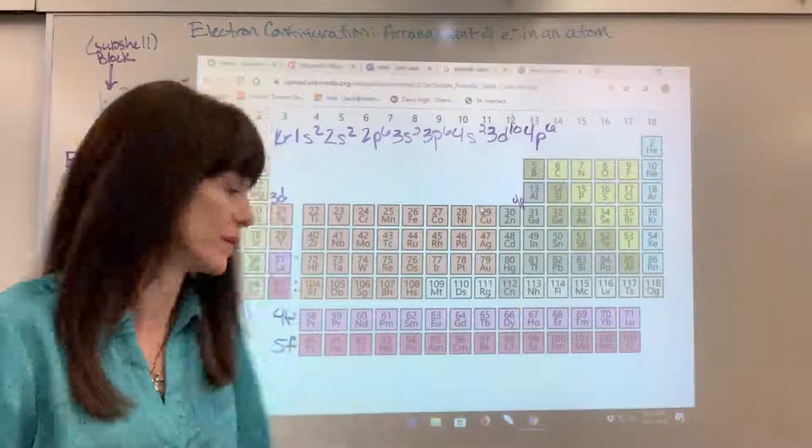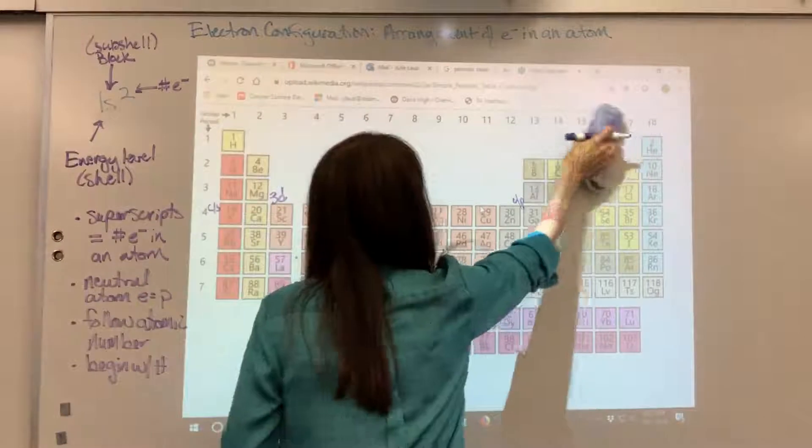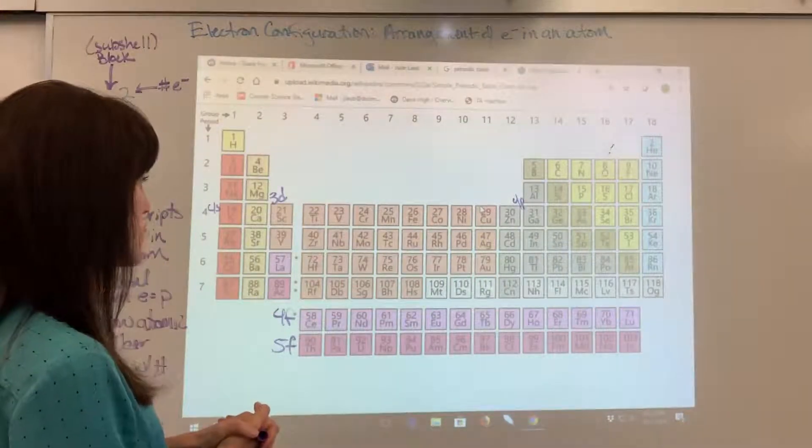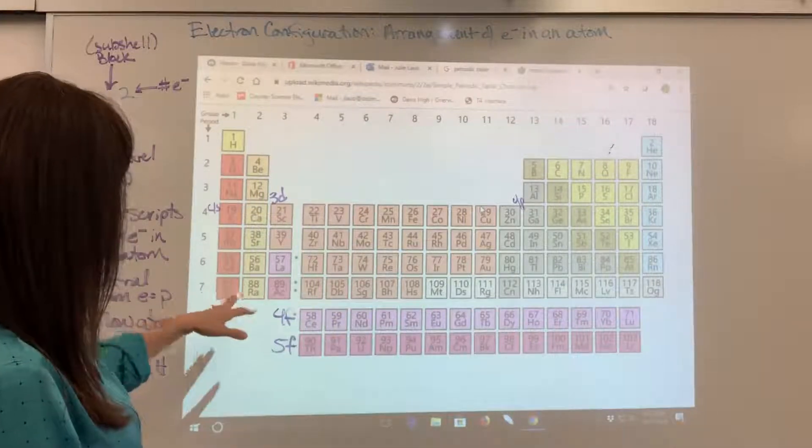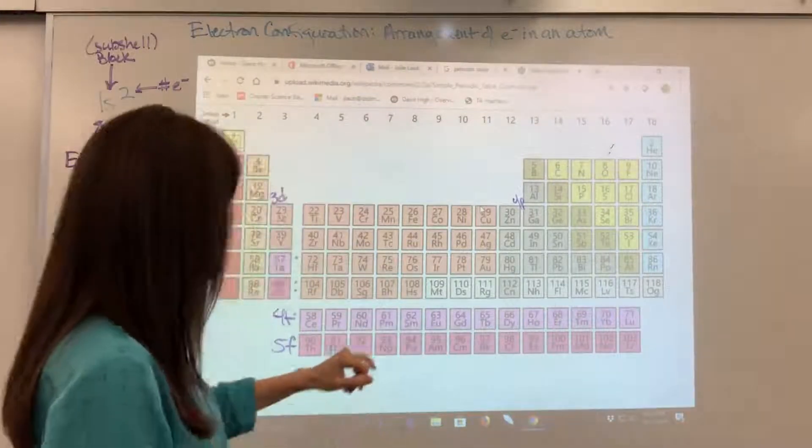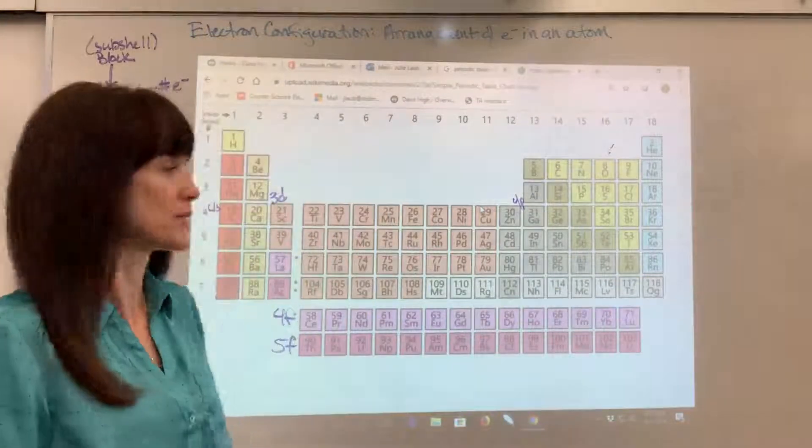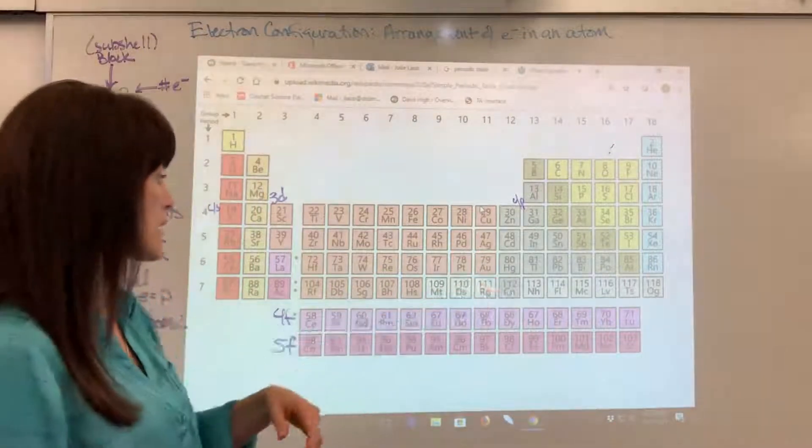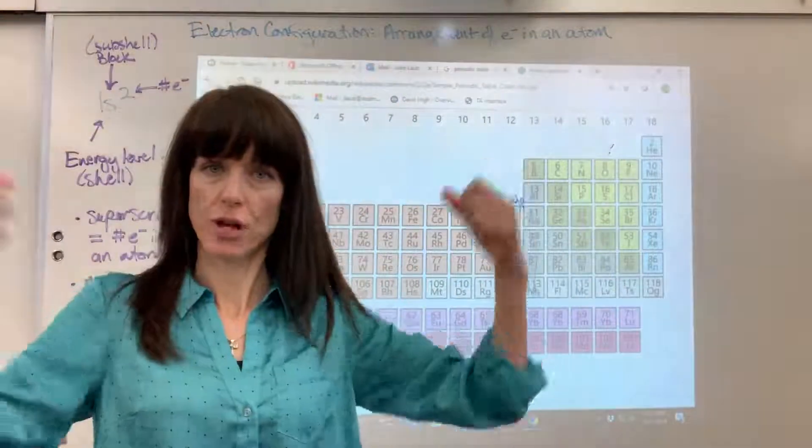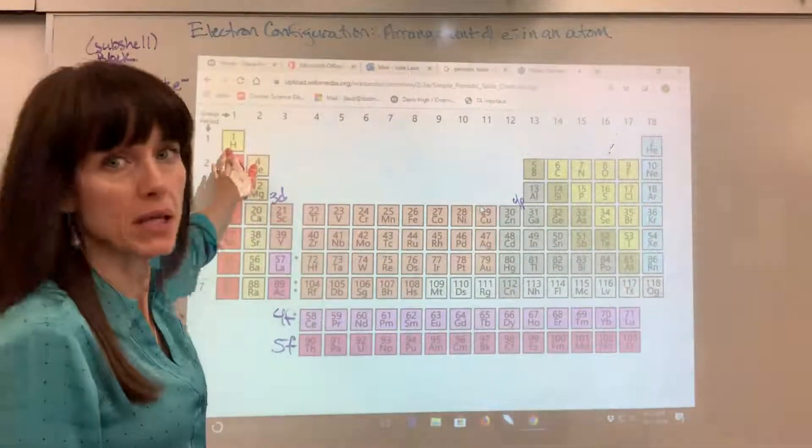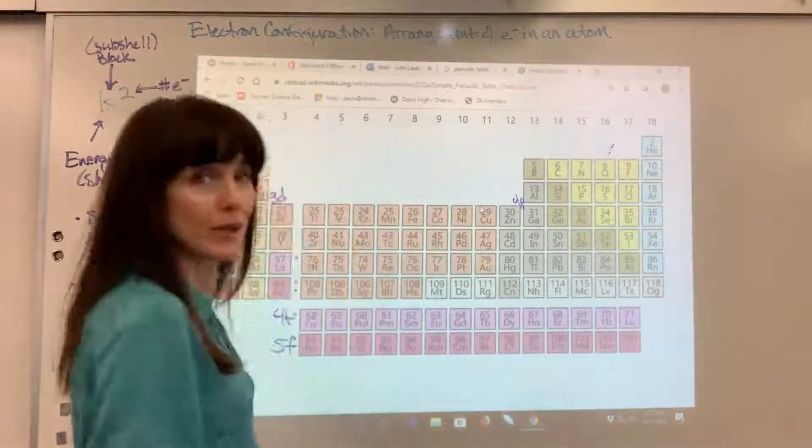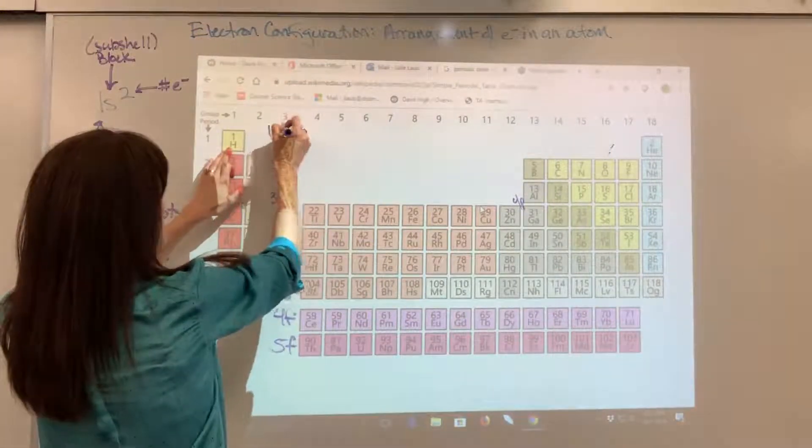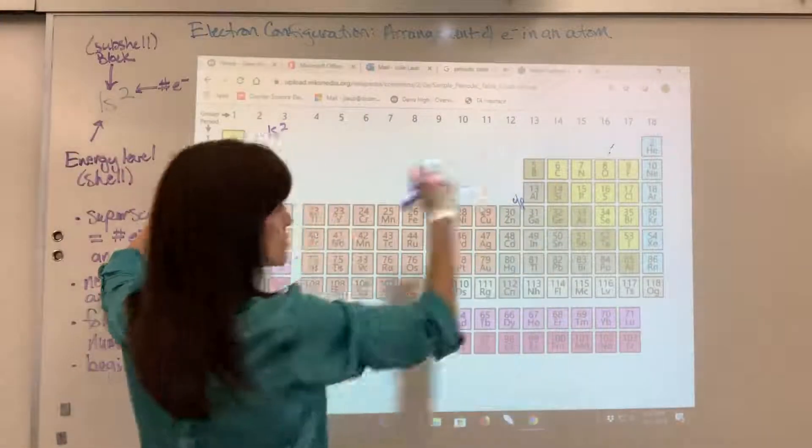I want to do two more with you. Let's do radon. Let's go down to radon. Deep breath. Start at the beginning. Hydrogen. We're going all the way to radon. We want to show where 86 electrons are. Hydrogen, 1s2. So first energy level, S block, fits two electrons.